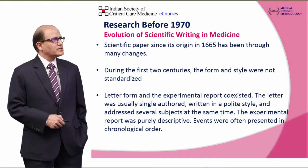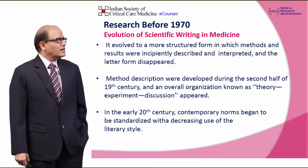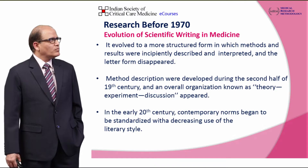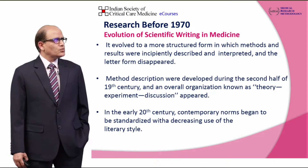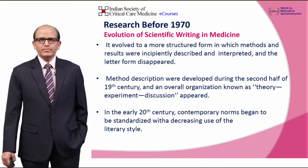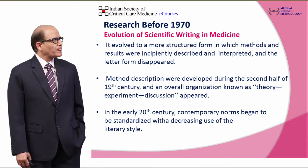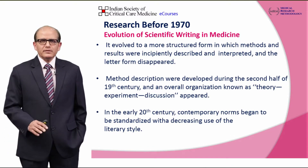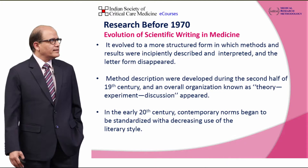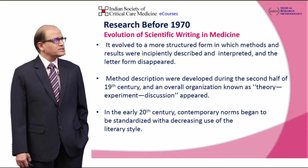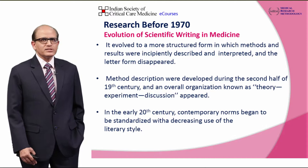Experimental reports were descriptive and events were often presented in a chronological manner. It evolved to a more structured form where methods and results were described and interpreted, and the letter form gradually disappeared. Method descriptions were developed during the second half of the 19th century, and papers began to include theory, experiment, and discussion aspects in the early 20th century.